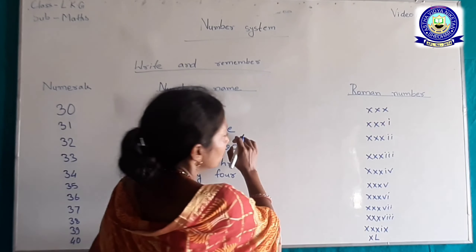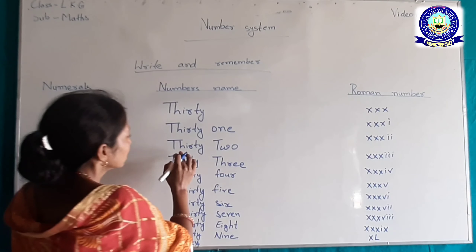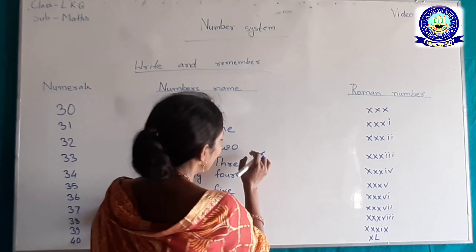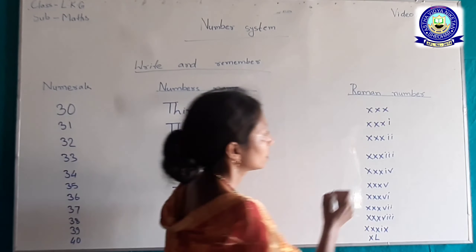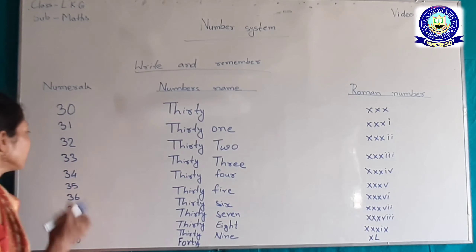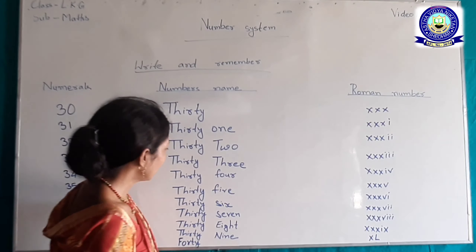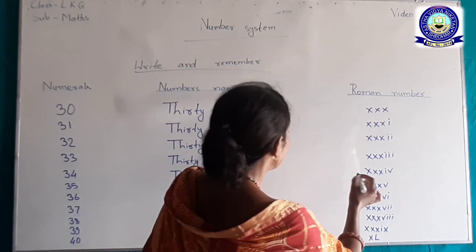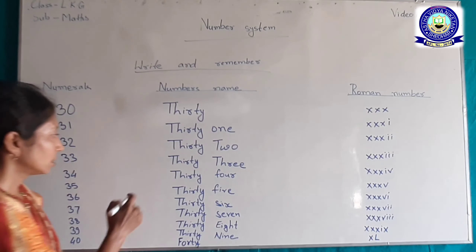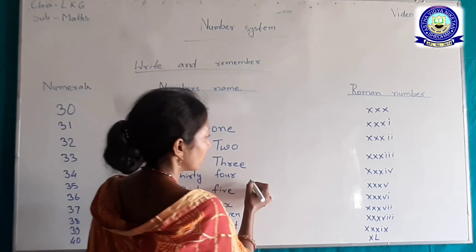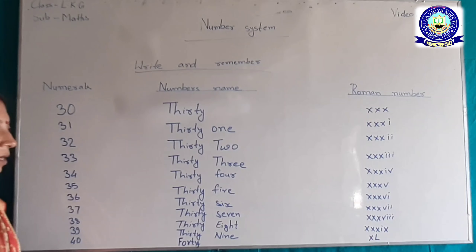Review: 31 — Triple X, I (XXXI)। 32 — THIRTY TWO, XXXII। 33 — THIRTY, XXXIII (Triple X, Triple I)। 34 — T-H-I-R-T-Y F-O-U-R, Roman number Triple X IV (XXXIV), 30 plus 4।